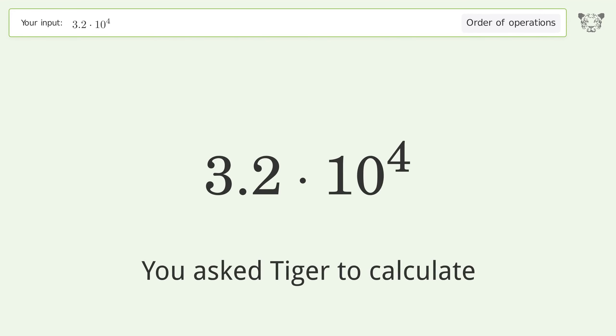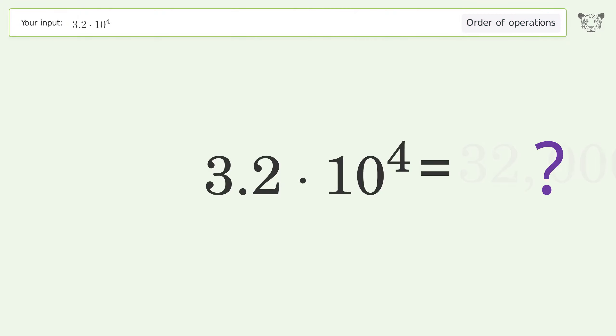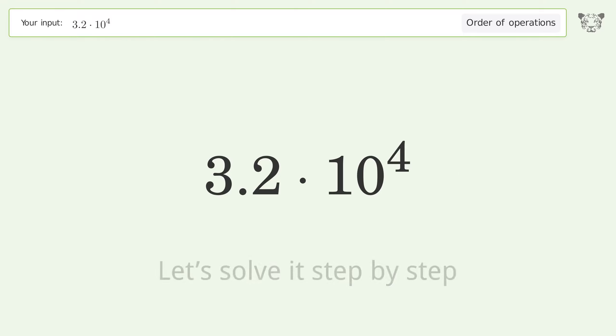You asked Tiger to calculate. This deals with the order of operations. The final result is 32,000. Let's solve it step by step.